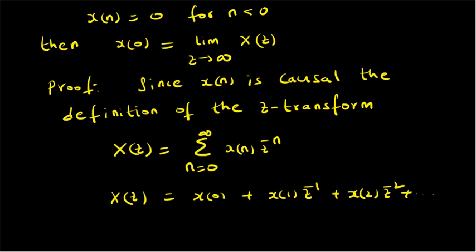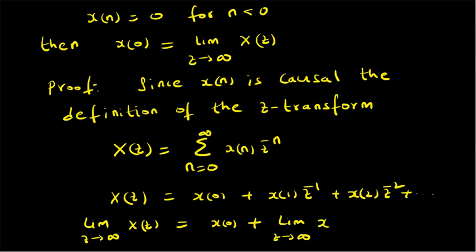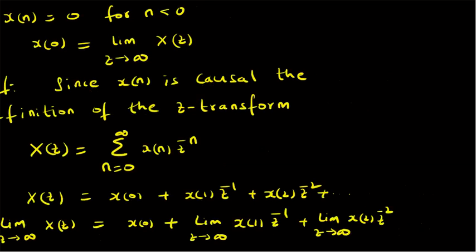Now by applying limits on both sides, that is, limit Z tends to infinity of X of Z will be equal to X of 0 plus limit Z tends to infinity of X of 1 times Z power minus 1 plus limit Z tends to infinity of X of 2 times Z power minus 2, and so on.